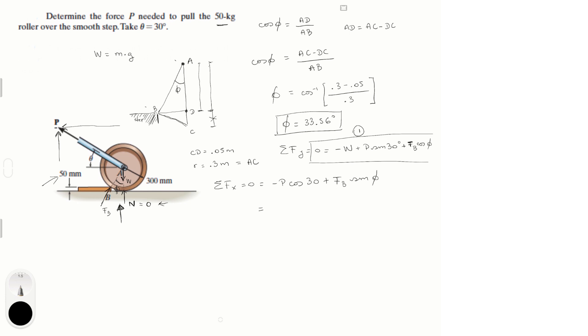Let me just write it down. Minus P cosine of 30 plus F of B sine of phi, which we already found, which is 33.56. Now, if we solve for F of B in terms of P, we get that F of B is equal to P cosine of 30 divided by sine of 33.56. F of B is equal to 1.566 P. Let's call this equation 2.